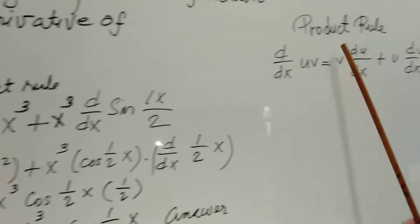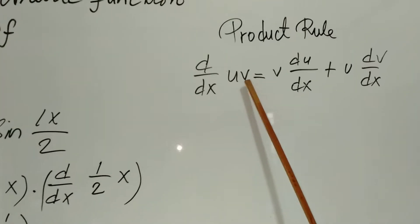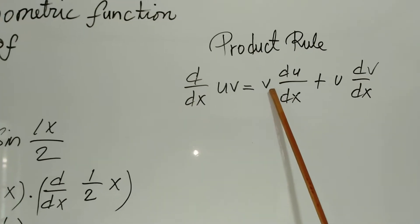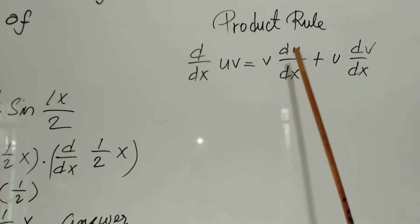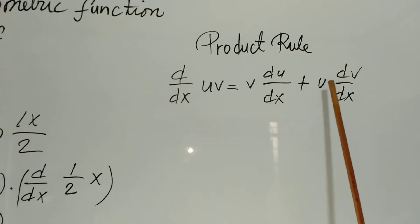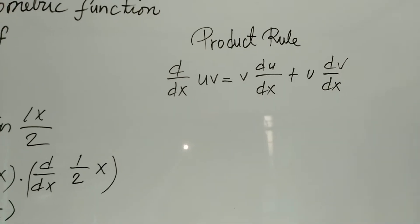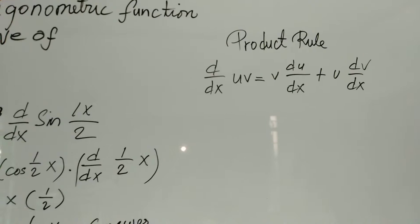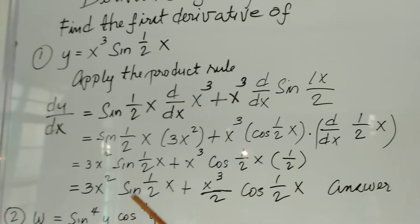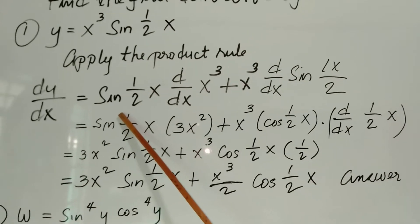The product rule states that the derivative of the product u and v is equal to v, the second term, times the derivative of the first, plus u, the first term, times the derivative of the second term. So we'll apply this product rule here, so dy over dx is equal to...